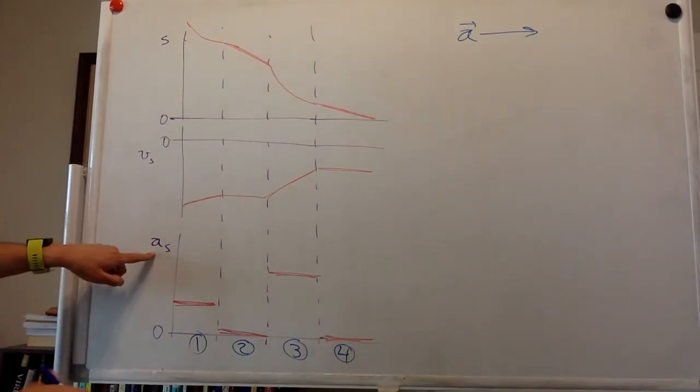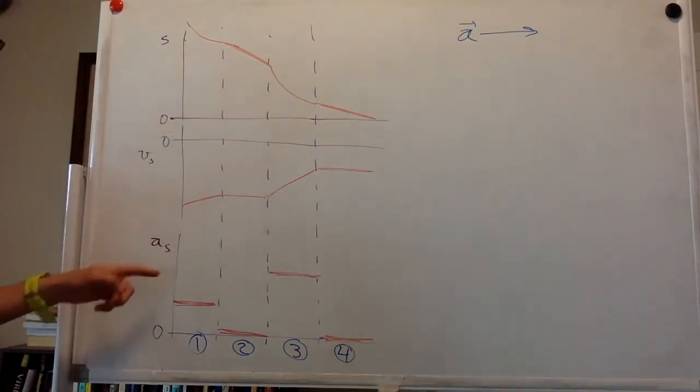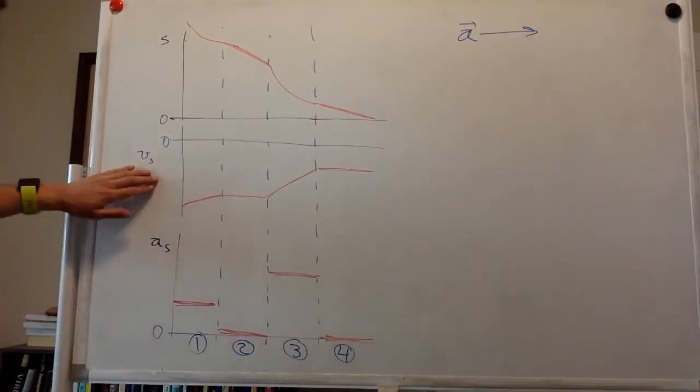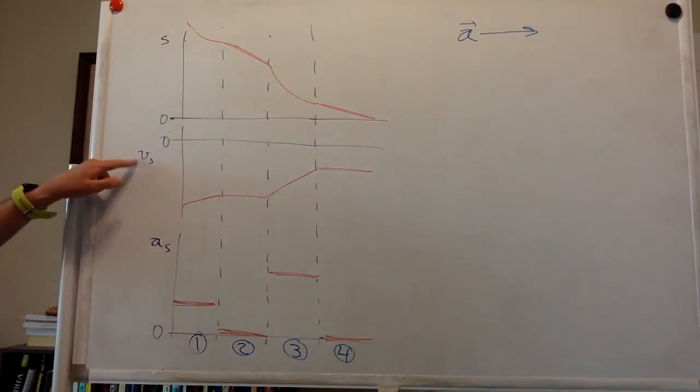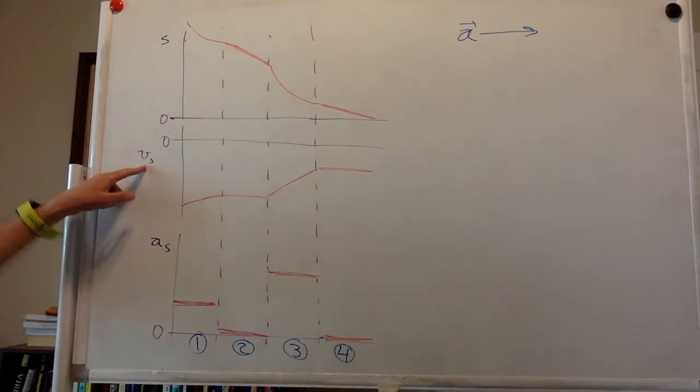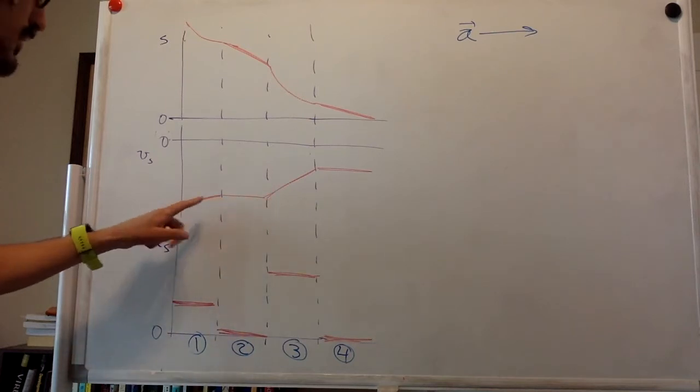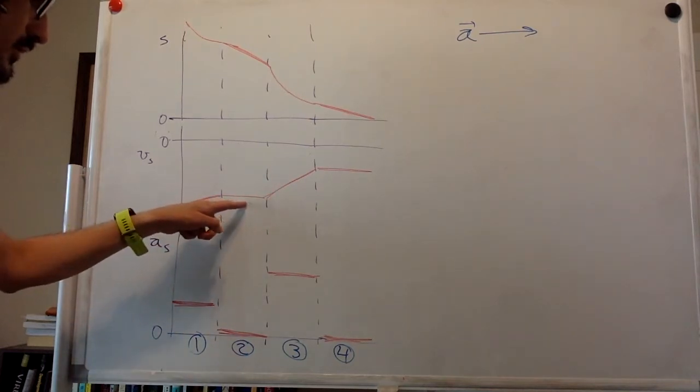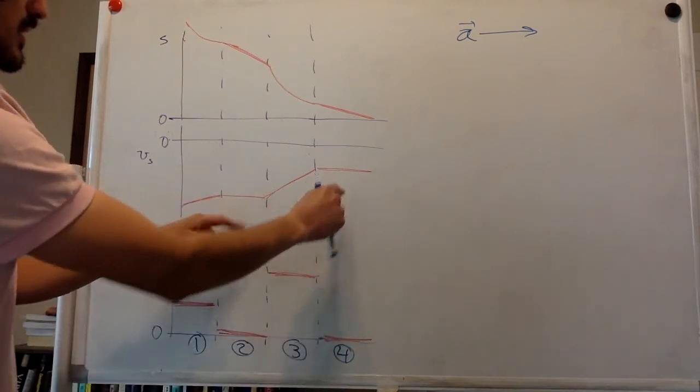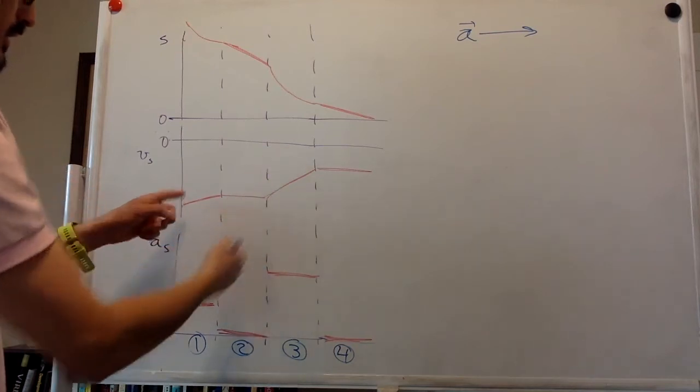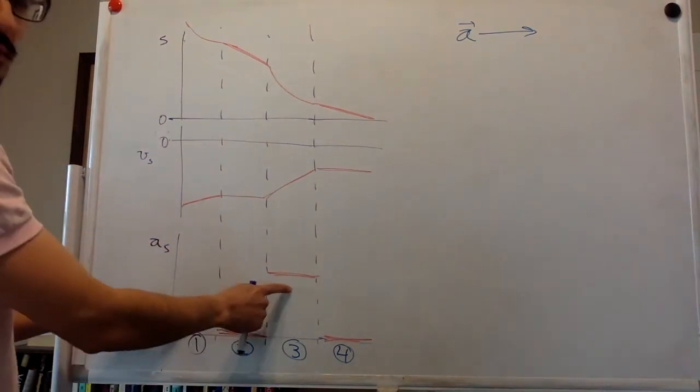So the acceleration along the direction of the segment is positive or zero. The velocity along the direction of the segment is always negative, but sometimes it is constant when the acceleration is zero. And at other times it is a straight line, and the slope of course depends on the acceleration here.